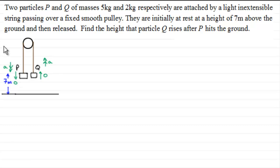Suppose we have two particles P and Q of masses 5 kg and 2 kg respectively, and they're attached by a light inextensible string passing over a smooth fixed pulley. They're initially at rest at a height of 7 meters above the ground and then released. And what we've got to do is find the height that particle Q rises after P hits the ground.